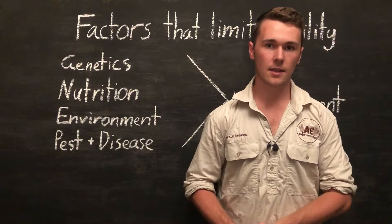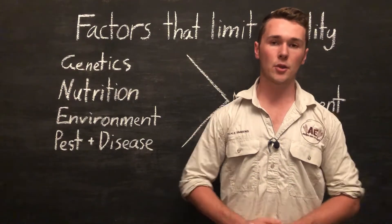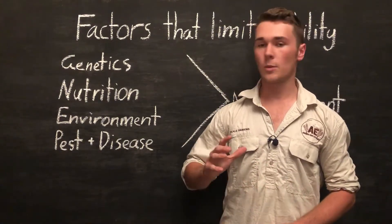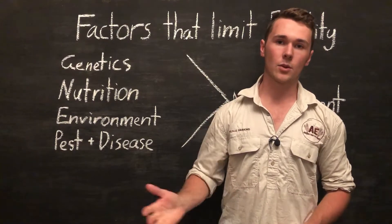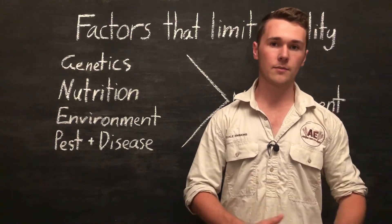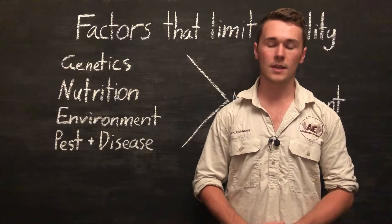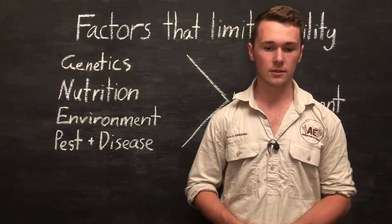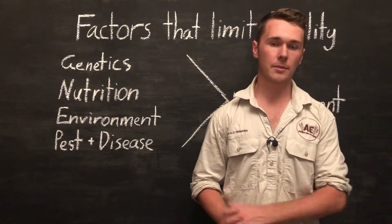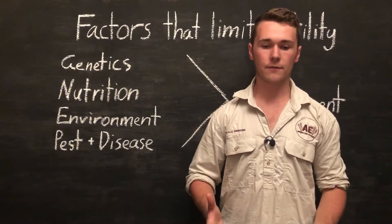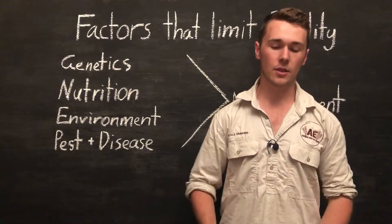So there's some other techniques that we can use nutrition for. The first one is called flushing. And that's where we increase the feed given to a female animal before they ovulate. And essentially what this will do is increase the amount of eggs released. Now this is mostly helpful in sheep or pig production, where generally they have fairly larger litter sizes.